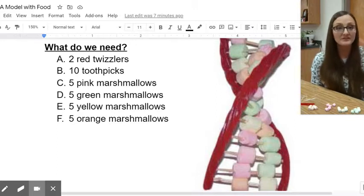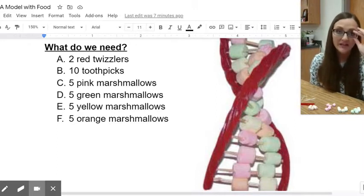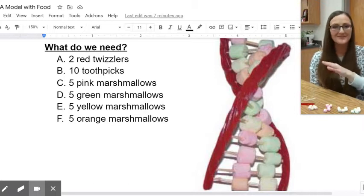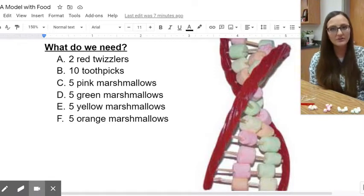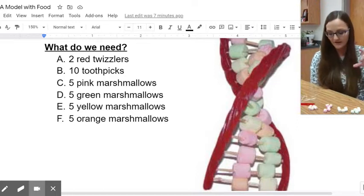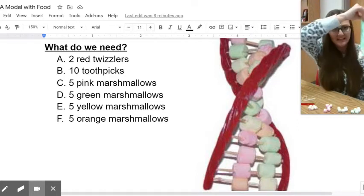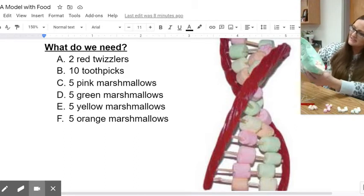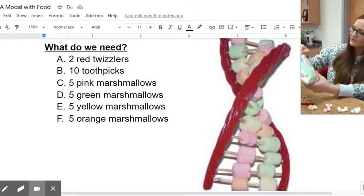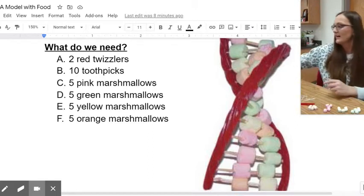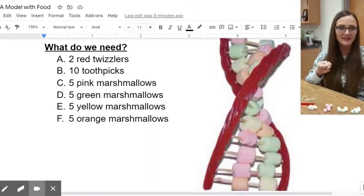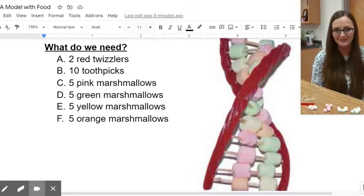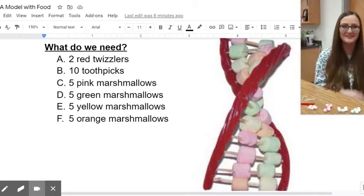And then we need marshmallows. Little miniature marshmallows work really well. It really helps to see the different nitrogen-containing bases when they have four different colors. I went ahead and just bought mini fruit marshmallows in four fun fruity colors: strawberry, lime, lemon, and orange. That entire bag cost me something like 88 cents. So it's very cheap to make this.